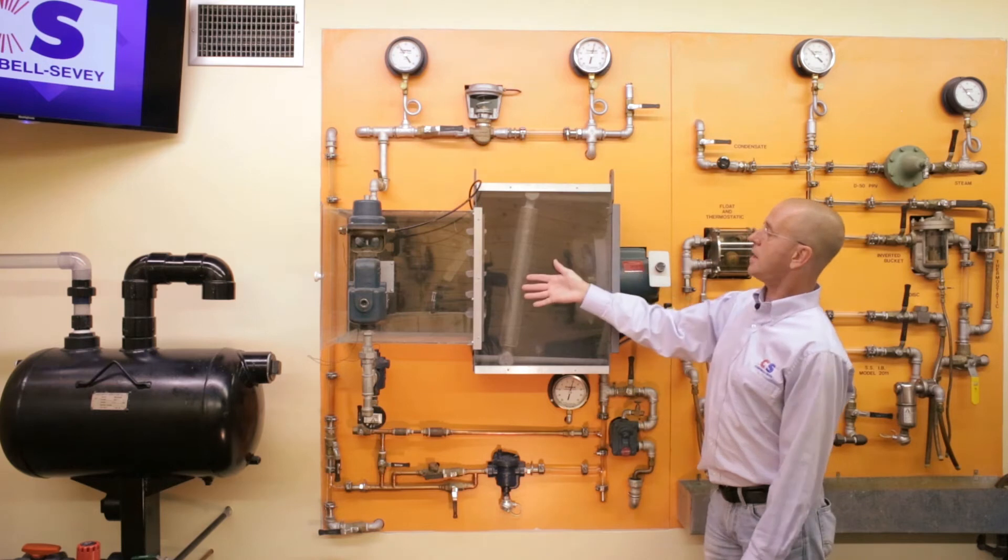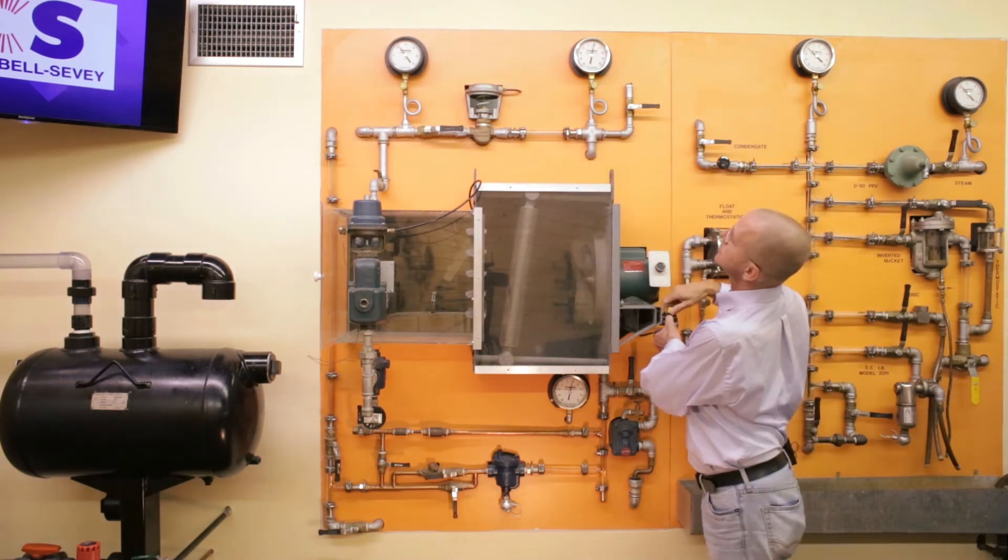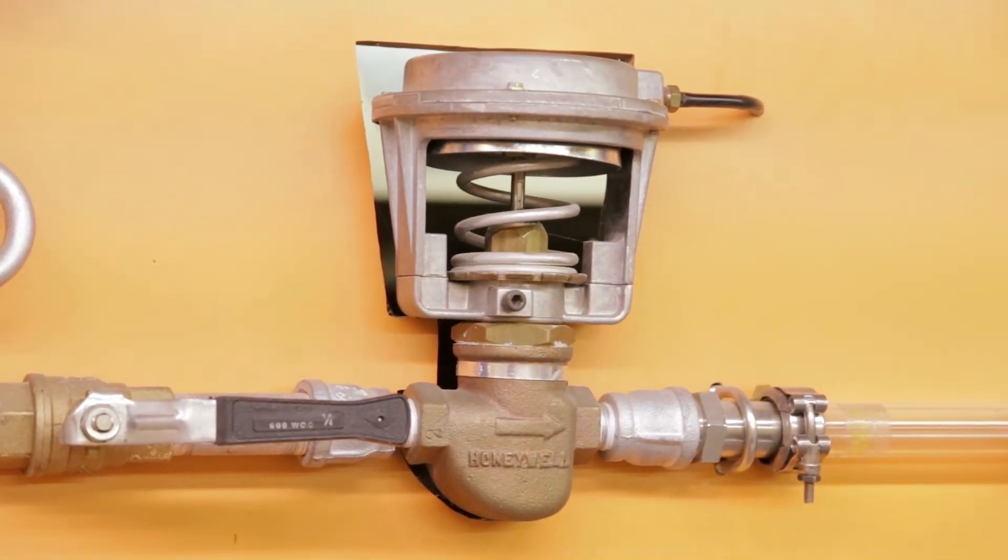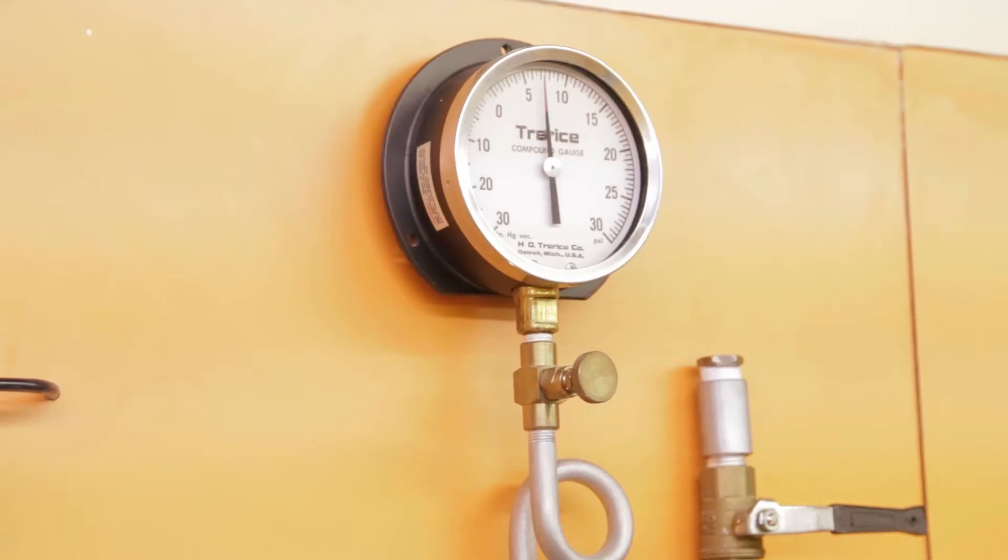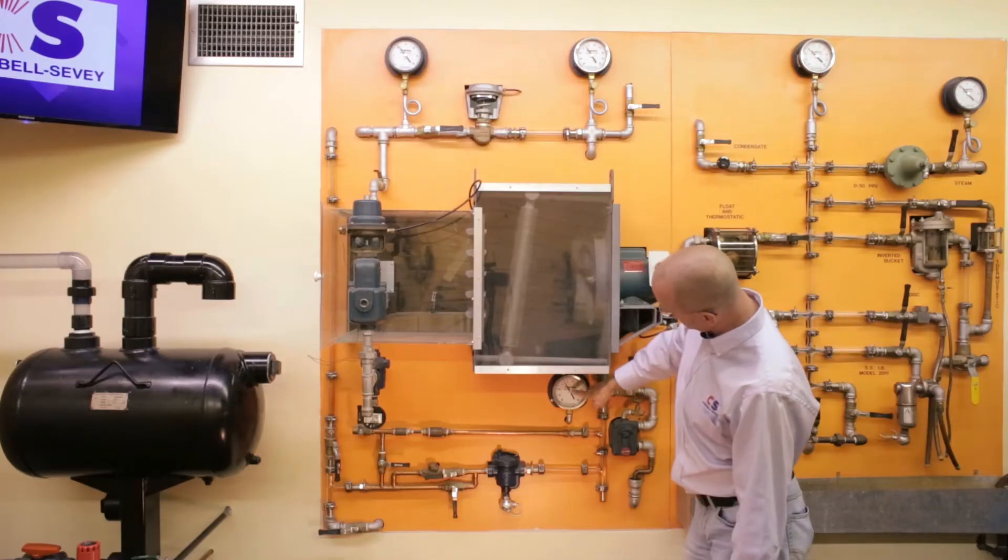As the outside air warms up, of course, our control valve is going to modulate down. So if we modulate our control valve down, you can see here, and our pressure starts to drop off. You can see the pressure dropping off down here as well.